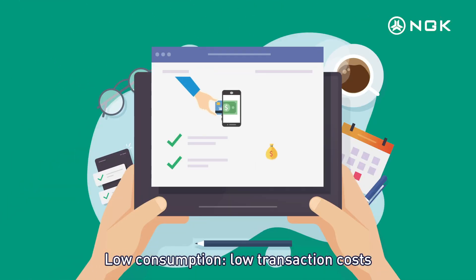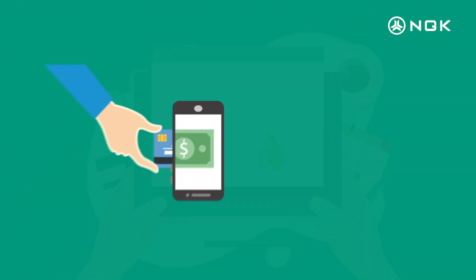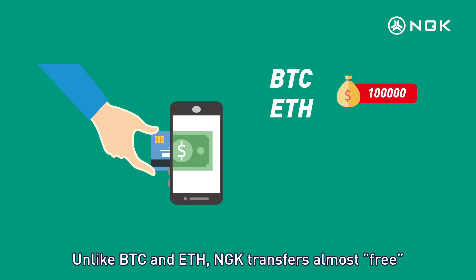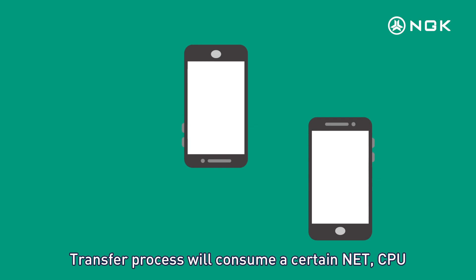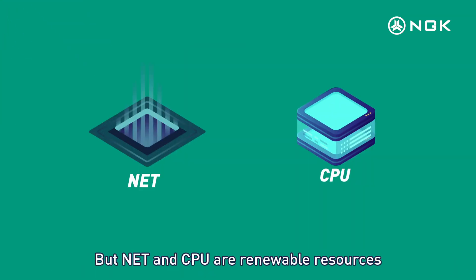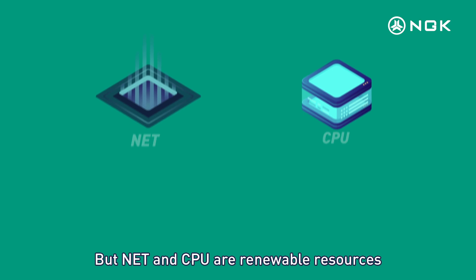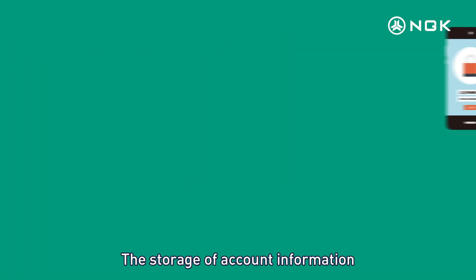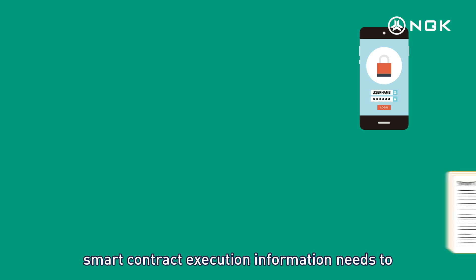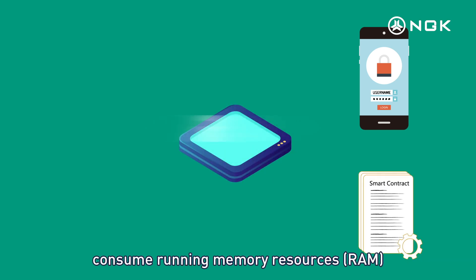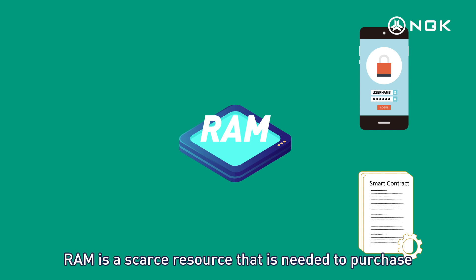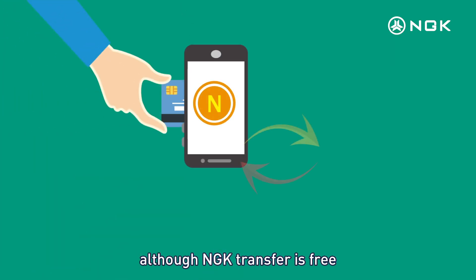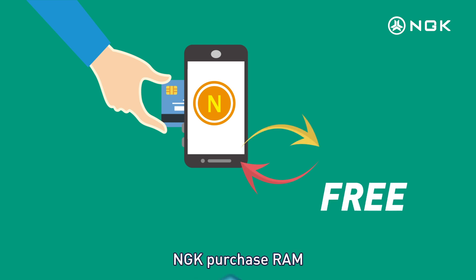Low consumption, low transaction costs. Unlike BTC and ETH, NGK transfers are almost free. The transfer process will consume a certain amount of NET and CPU. However, NET and CPU are renewable resources that users can obtain by mortgaging NGK. The storage of account information and smart contract execution information needs to consume RAM. RAM is a scarce resource that must be purchased, so although NGK transfers are free, users still need to consume NGK to purchase RAM.